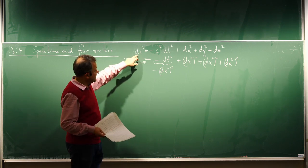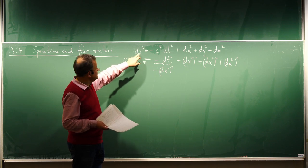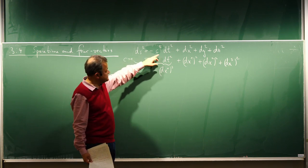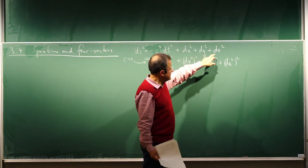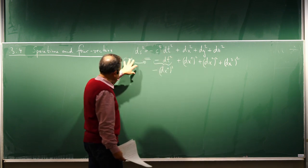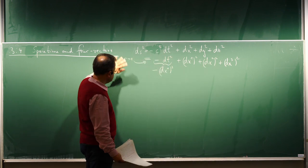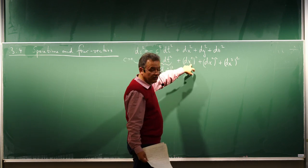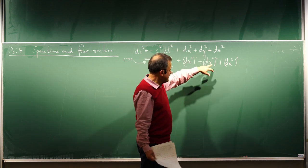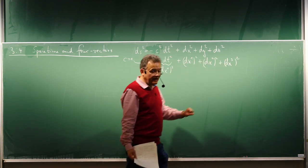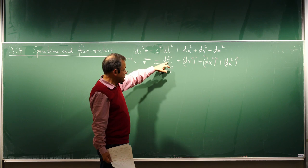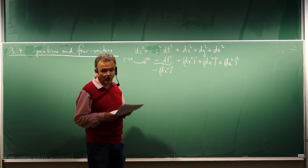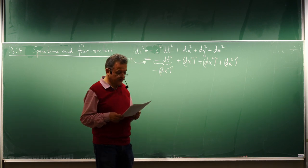You remember from last time we have this line element ds squared, which is the invariant in the four-dimensional spacetime: minus c squared dt squared plus dx squared plus dy squared plus dz squared. If c equals 1, which I will mostly use, we can write x1, x2, x3 for the spatial coordinates and x0 for t, labeling the four coordinates as x0, x1, x2, x3.